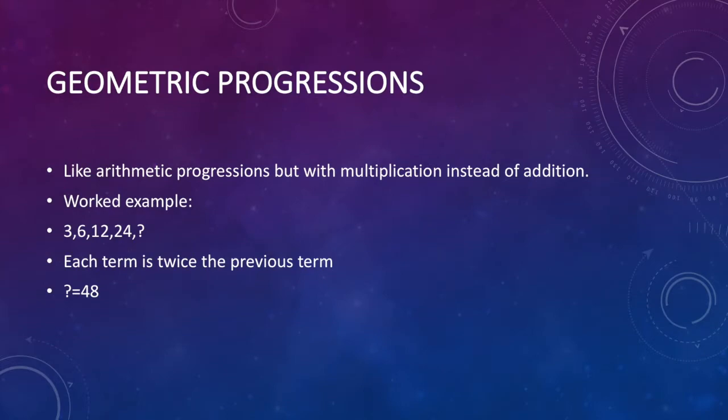Geometric progressions. Geometric progressions are like arithmetic progressions, but instead of adding a fixed number to the previous term to get the next term, you multiply the previous number by a fixed number. For example, 3, 6, 12, 24 question mark. To find question mark, we multiply 24 by 2 to give 48.